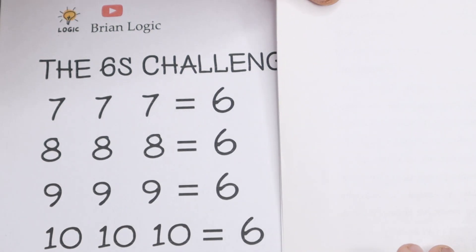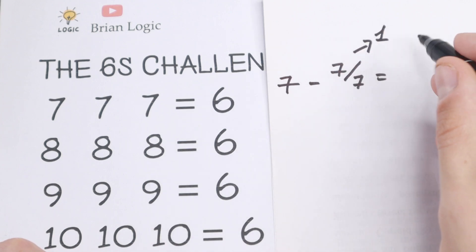We will have 7, 7, 7 and we need to create 6. How can we get this 6? Take a look at how we can get this. If we write this as 7 minus 7 over 7, if we divide 7 by 7 we will have 1. So 7 minus 1 equals 6. I hope you understand this step.